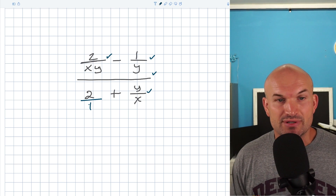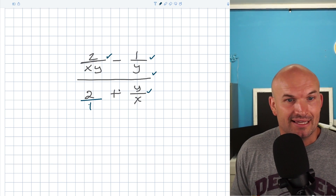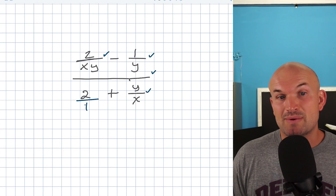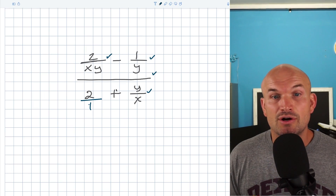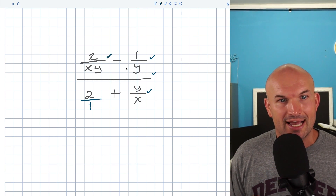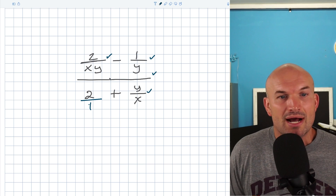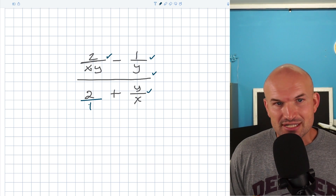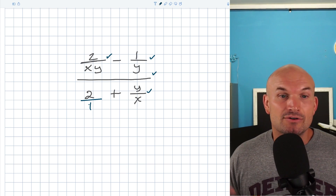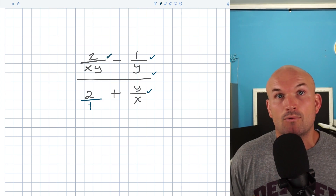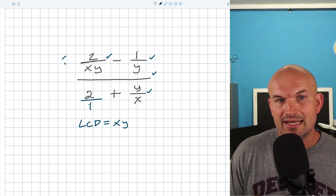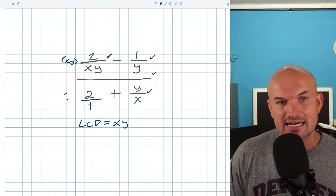We need to look to see if we can simplify anything — and thankfully these are basic problems so there's no simplifying from the start. The easiest way to find the LCD is to multiply the denominators. I want you to recognize: I have an x, a y, and an xy which is already the product. So the LCD is just xy — it's not going to be x² and y². We already have x and y, and xy is the smallest multiple that x and y divide into.